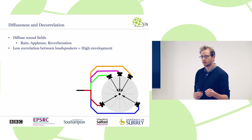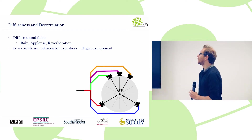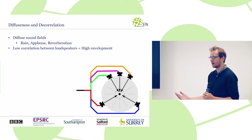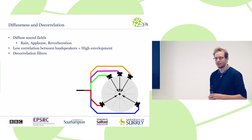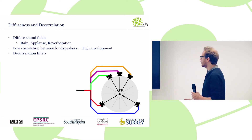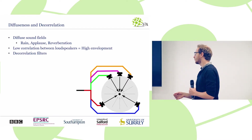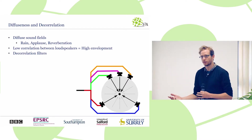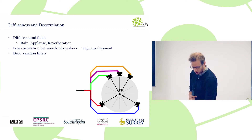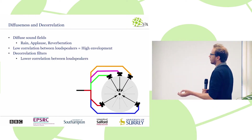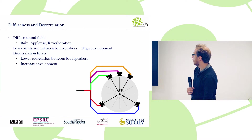In our early subjective research, we found — quite intuitively — that low correlation between loudspeakers gives a high amount of envelopment and immersion. A very convenient way to achieve low correlation between loudspeakers is to use decorrelation filters. This is convenient because you can transmit a very low channel count to your renderer, and then the renderer uses decorrelation filters to generate as many loudspeaker signals as it needs, giving you low correlation and therefore high envelopment.